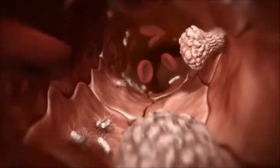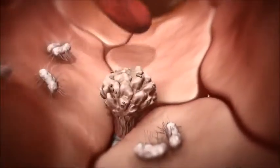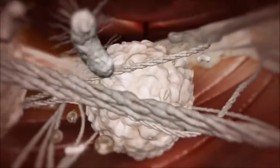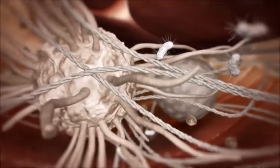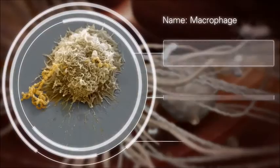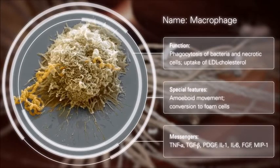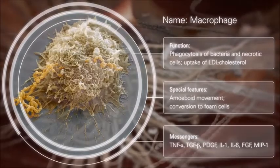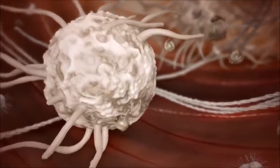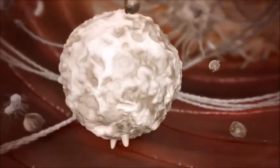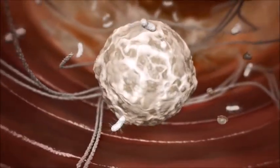The next step in the development of atherosclerosis is the formation of so-called fatty streaks. Some white blood cells travel into the vessel wall and differentiate into macrophages. By absorbing harmful cholesterol, they turn into foam cells. Periodontal bacteria promote this process, leading to even more fatty deposits in the blood vessel walls.